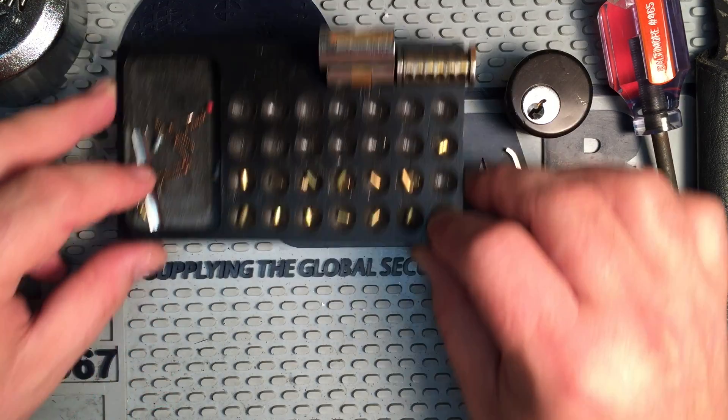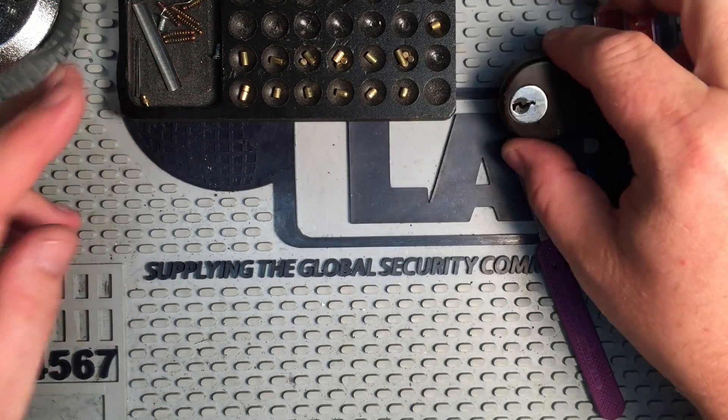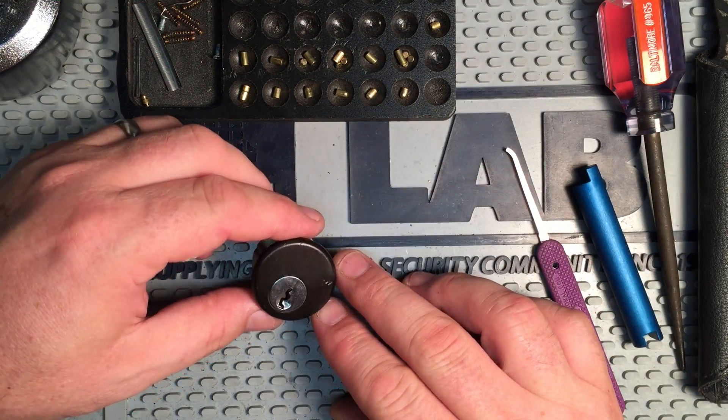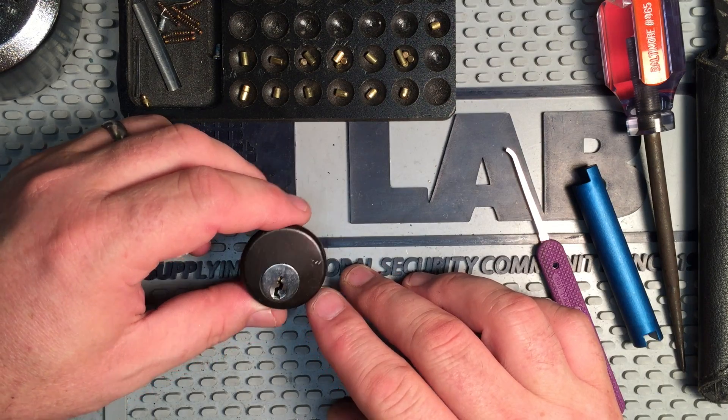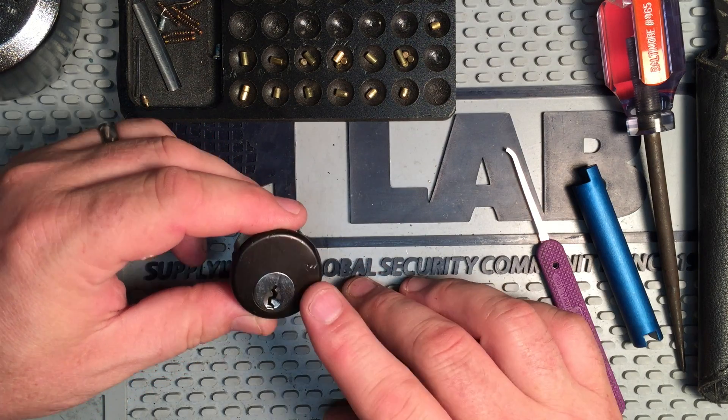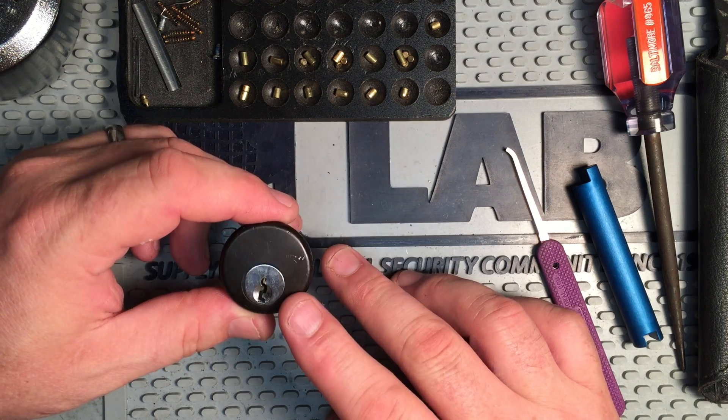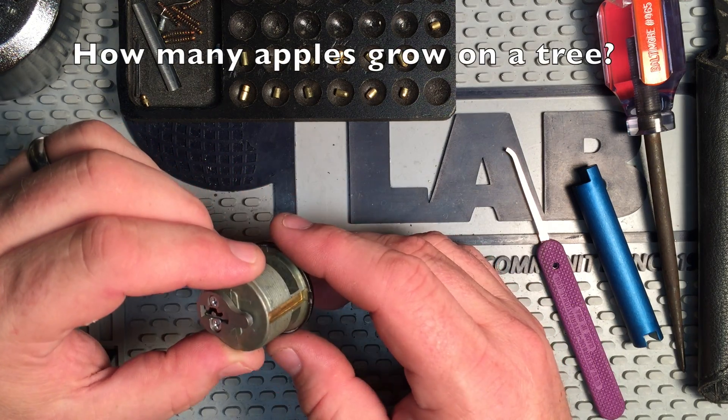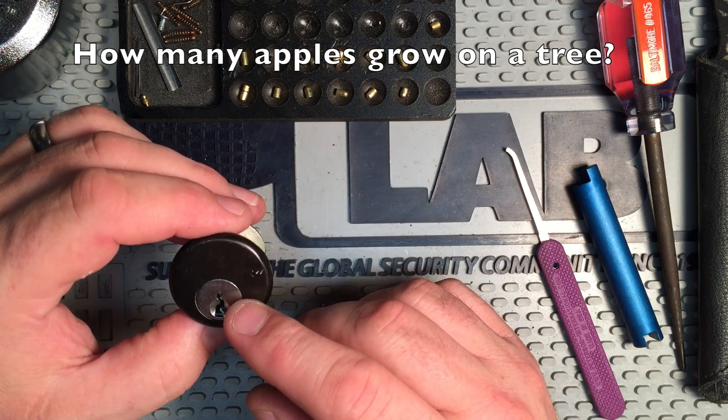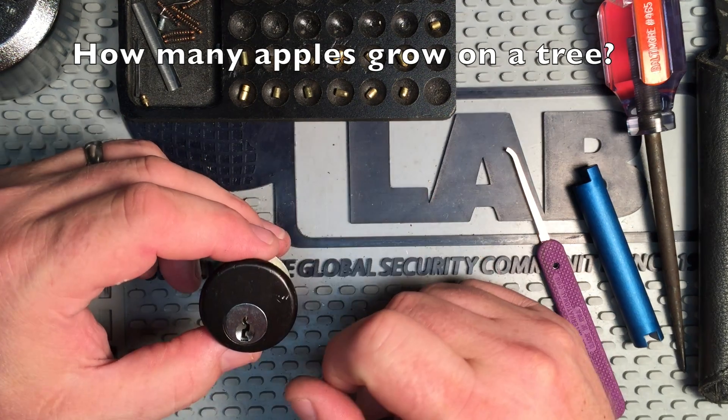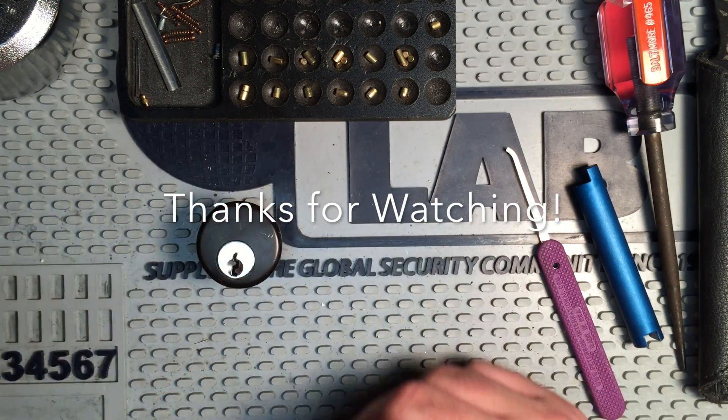Alright as promised we have a challenge lock, this one's not finished yet but it's one I'm making and so if you'd like this challenge lock it won't come with a key, that's a Y1 key, a Yale Y1 key. If you have a key blank maybe you can make one for it but anyway answer this riddle and I will get it out to you. Thanks for watching.